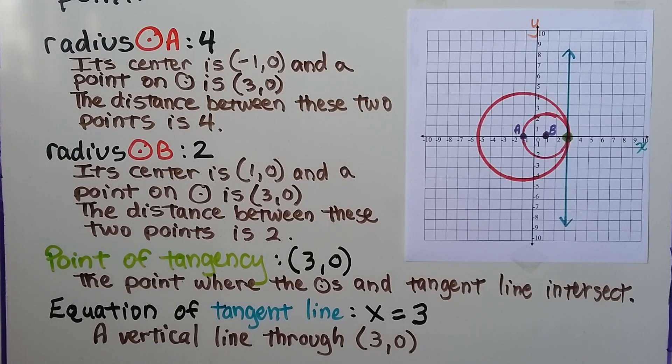The point of tangency is 3, 0 right here. It's the point where the circles and tangent line intersect. And the equation of the tangent line is x is equal to 3.